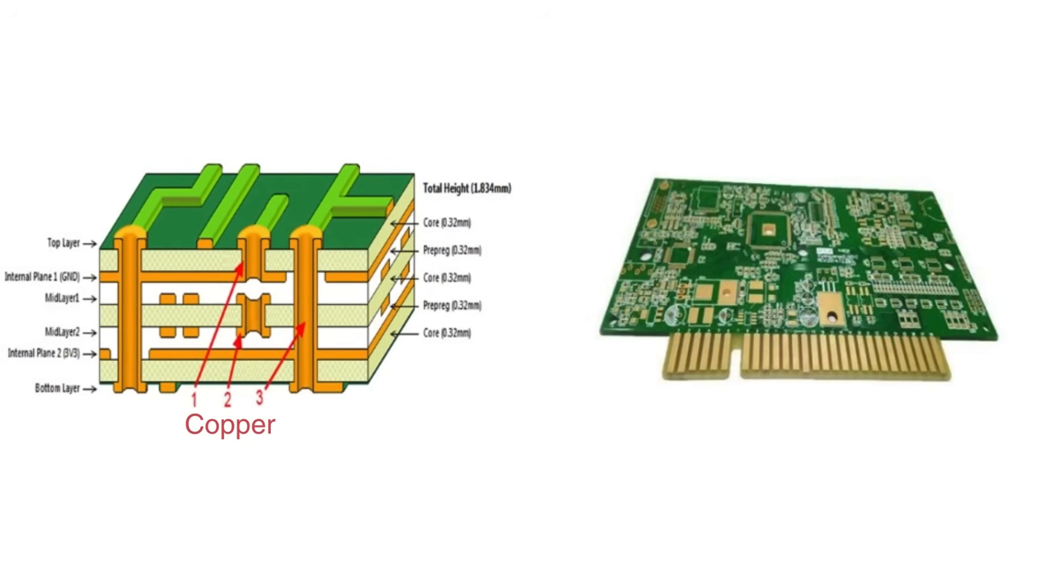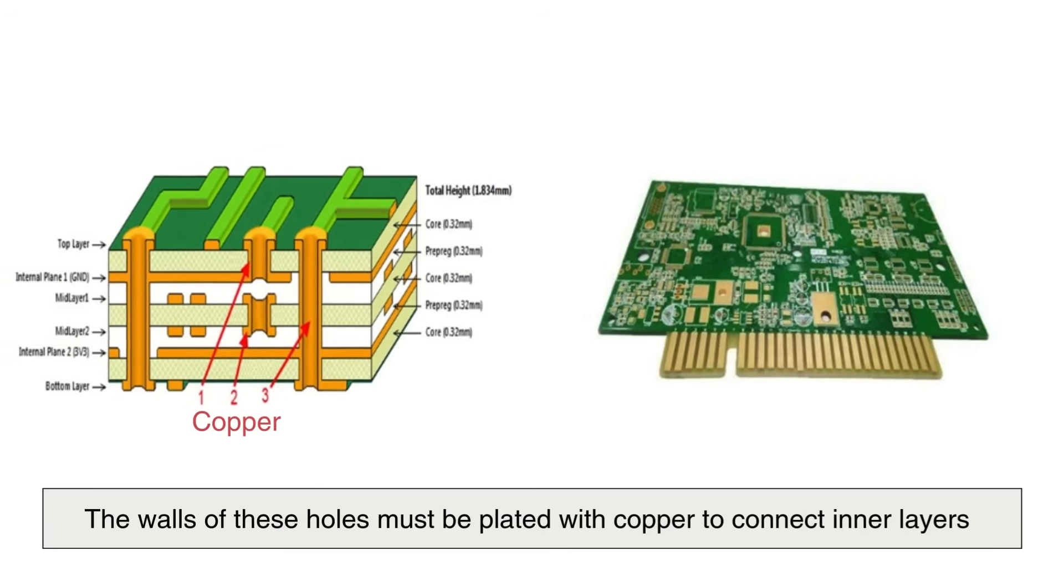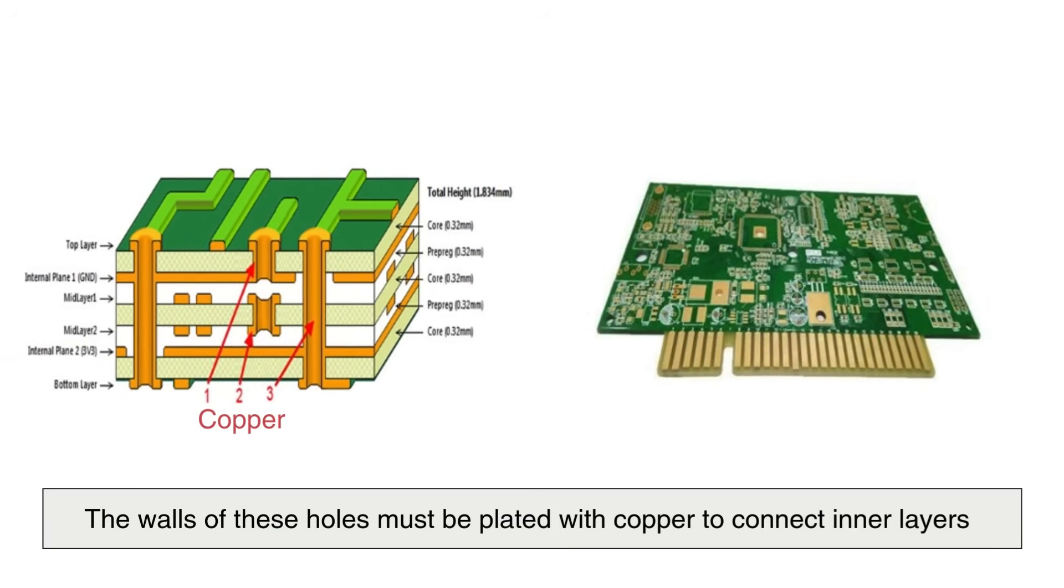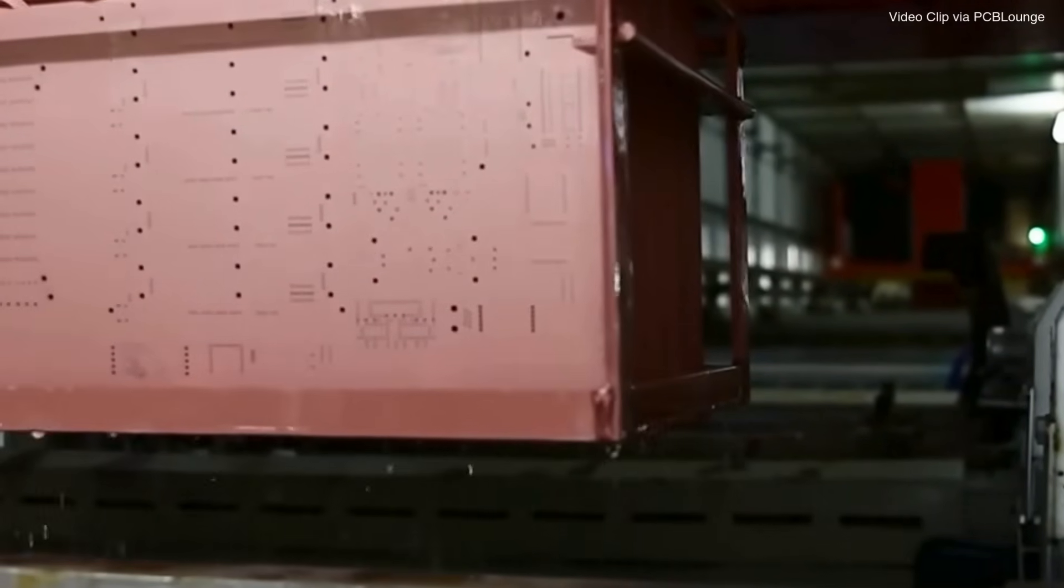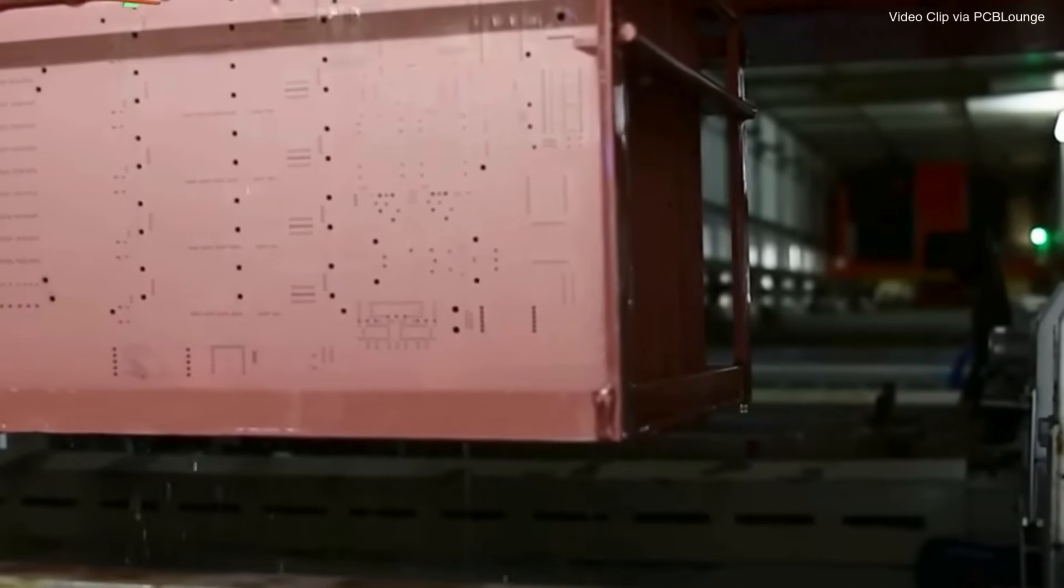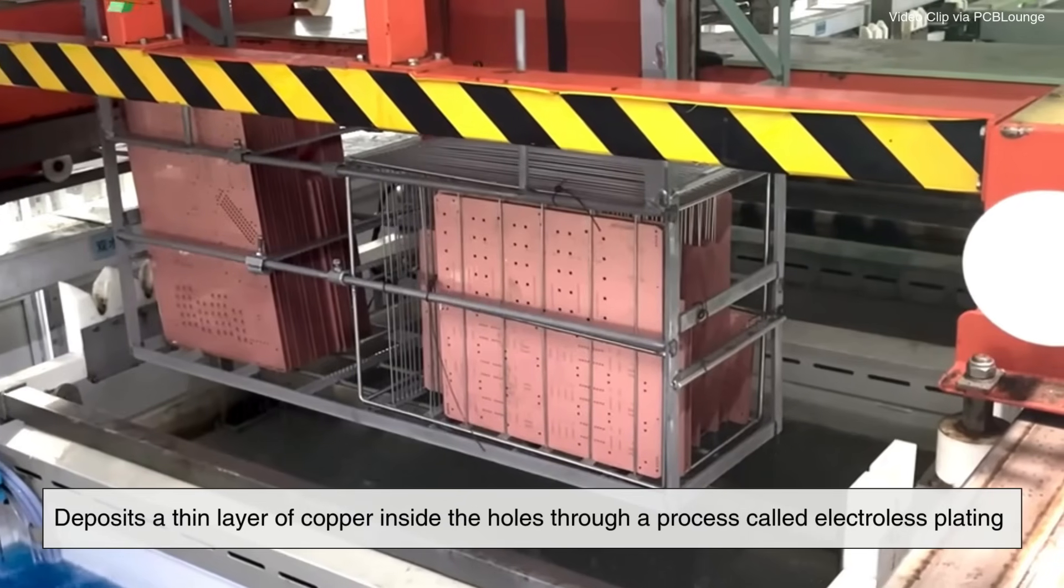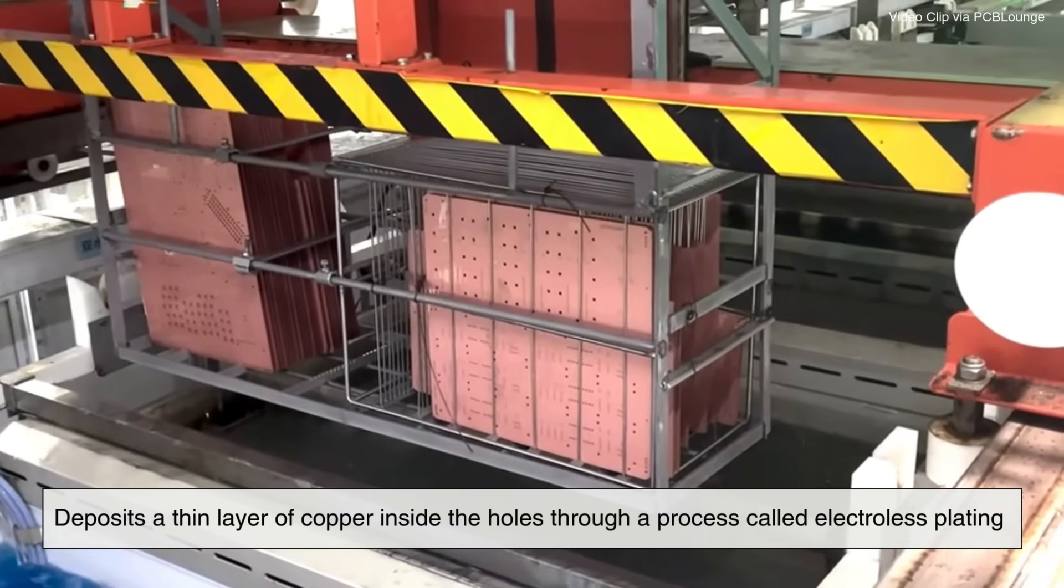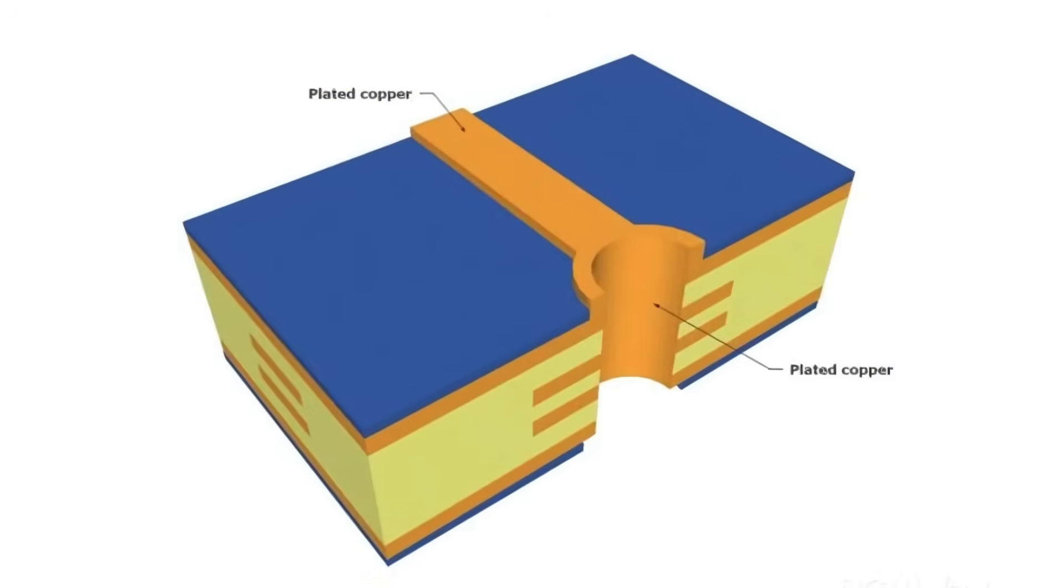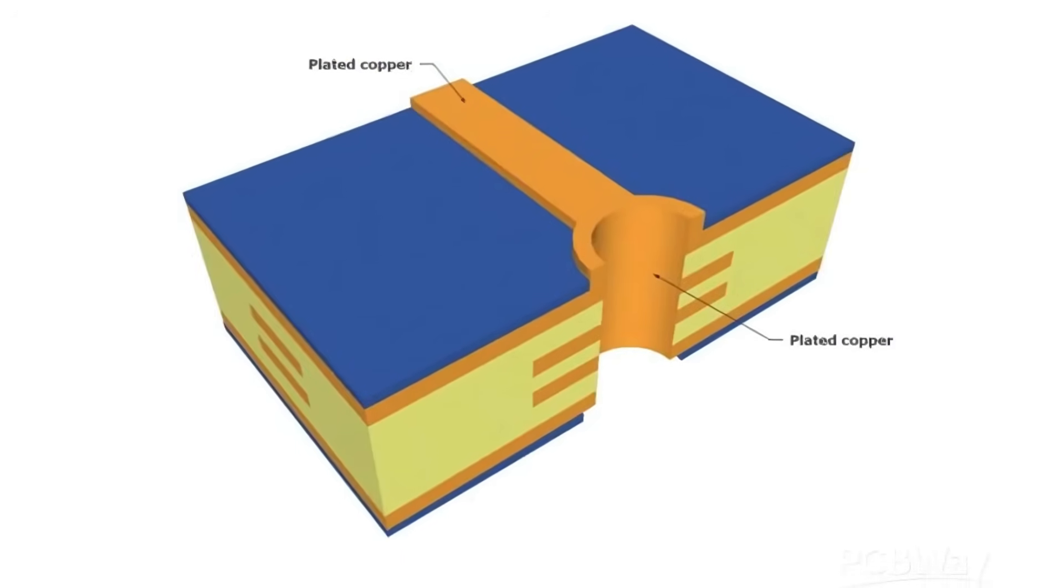For multi-layer boards, the walls of these holes must be plated with copper to connect inner layers. To achieve this, the board is cleaned and then placed in a chemical bath that deposits a thin layer of copper inside the holes through a process called electroless plating. This forms the crucial interconnections between layers.